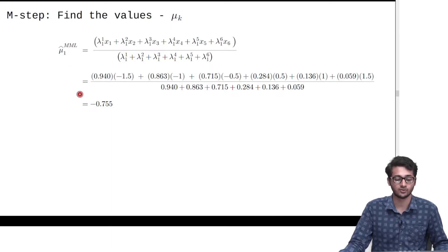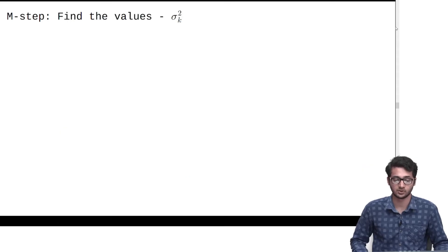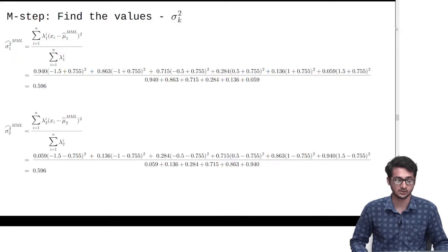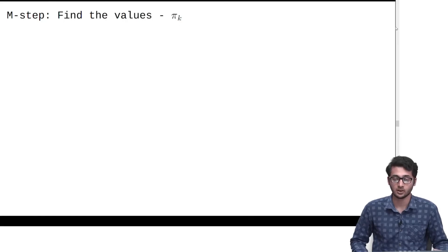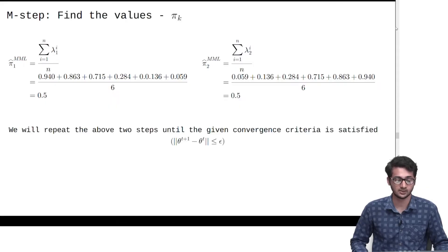This is the mean of the first distribution. Likewise, we find the value for the second distribution. Our next step is to find the values of sigma squared — sigma_squared_1 and sigma_squared_2. We also find the values of pi using its closed form expression. Then we repeat these two steps until our convergence criterion is satisfied.